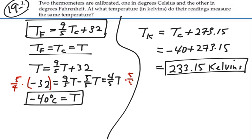So at 233.15 Kelvin, we have a temperature at which the Celsius and the Fahrenheit temperatures are the same.